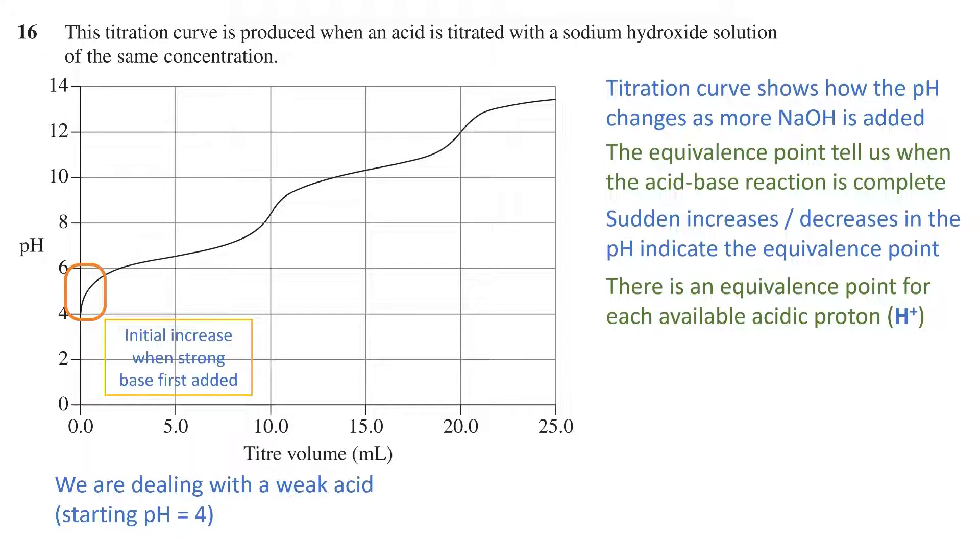Therefore, the sudden increase is just due to such a strong base entering the solution of a weak acid. Further along, we can see a sudden increase between pH 7 to 9, and a second increase around pH 11 to 13.